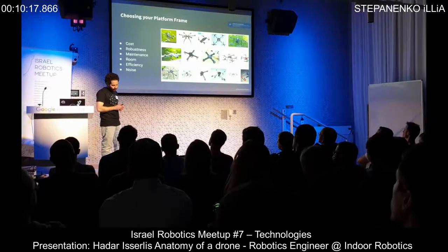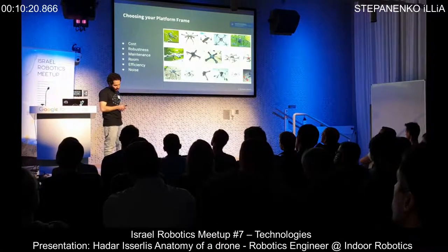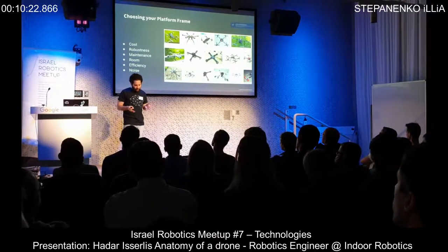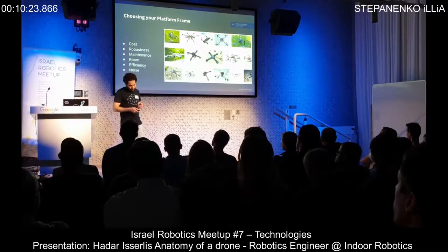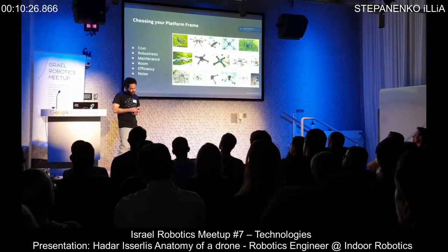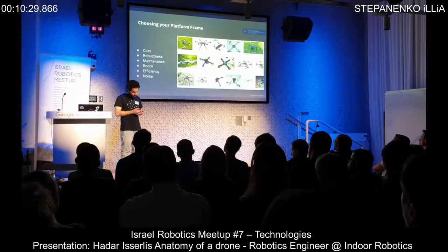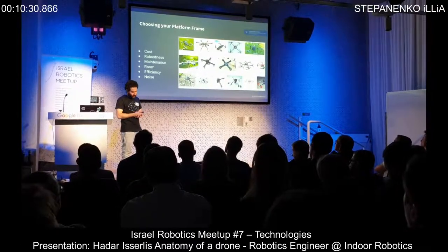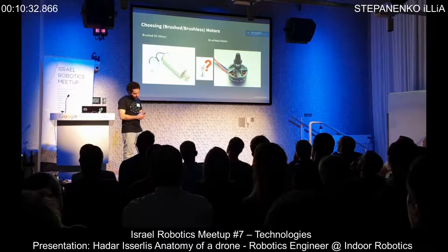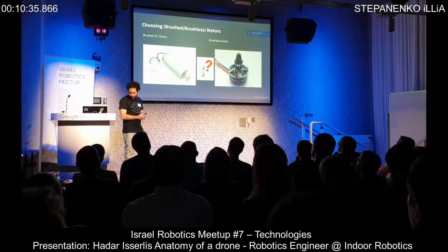Also consider efficiency and noise. As a rule of thumb: bigger drones with bigger rotors and propellers means less RPM, less noise, and more efficiency — something to keep in mind. Next step will be choosing our motors.